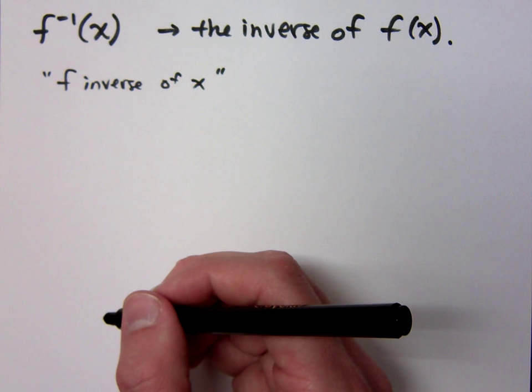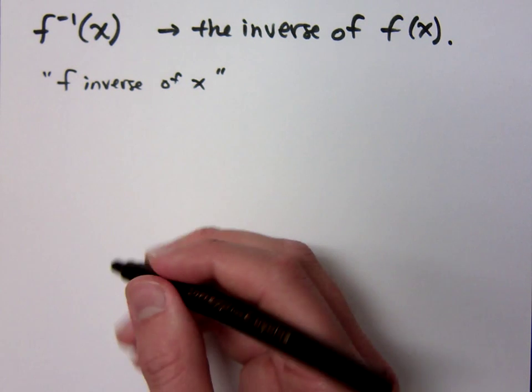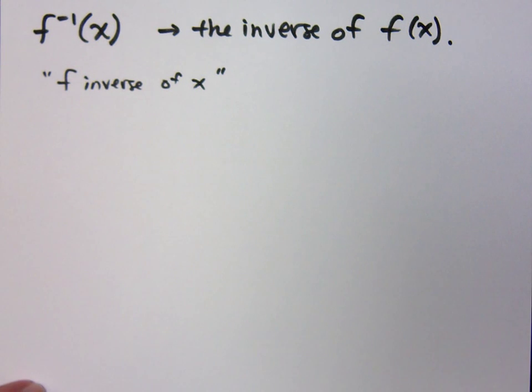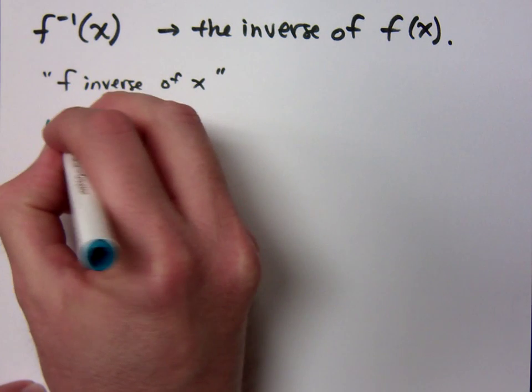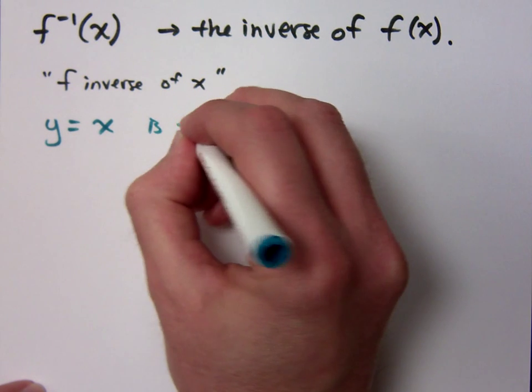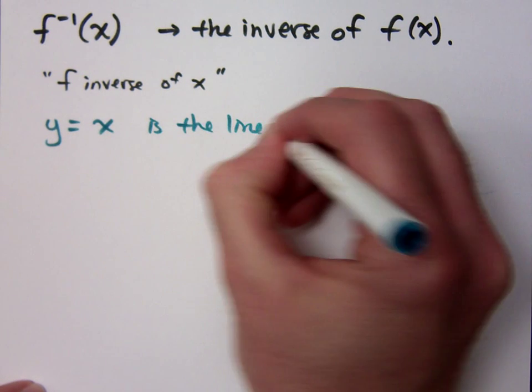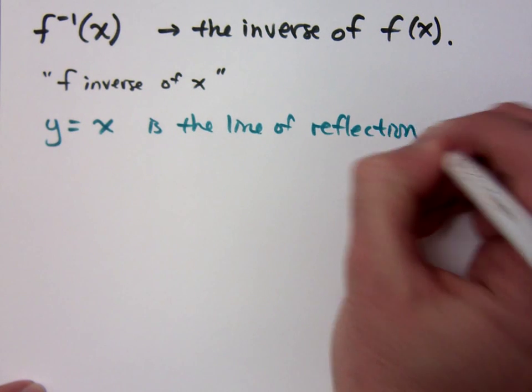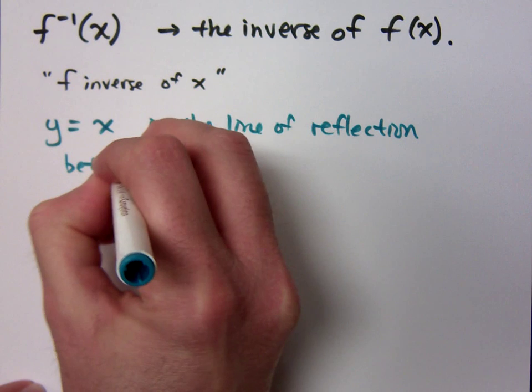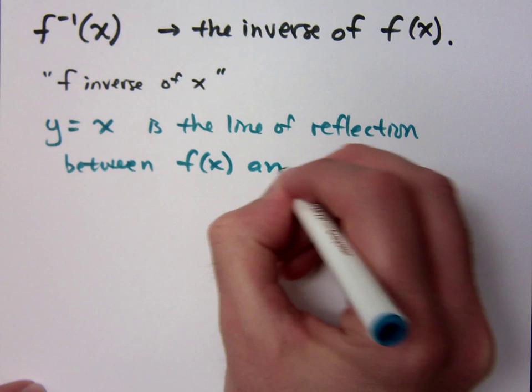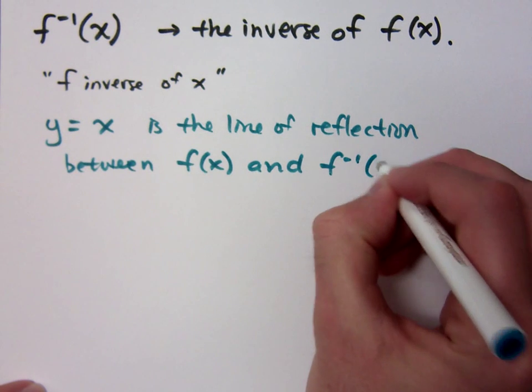So I told you we're trying to undo things, right? Let me show you the steps. Well, we saw earlier in the last video that y equals x is the line of reflection between those guys. It's the line of reflection between f(x) and f inverse of x.